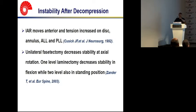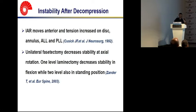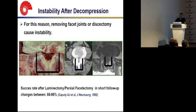What happens after decompression of the posterior elements? The instantaneous axis of rotation moves anteriorly, and this causes much more force applied onto the disc annulus, anterior longitudinal ligament, and posterior longitudinal ligament. Unilateral removal of the facet decreases stability at axial rotation, and one-level laminectomy decreases stability in flexion, while two-level decreases stability also in the upright position. Therefore, removal of facet joints or discectomy causes instability with high probability.